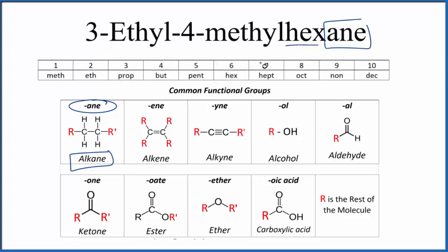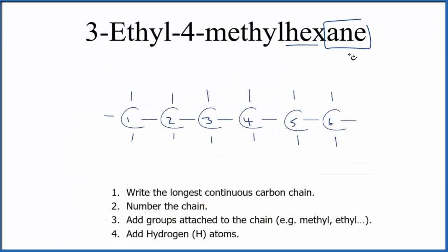For hex, hex is a prefix when we have six, so we're going to have six carbon atoms with single bonds. Let's put those up there and label the carbons one through six. So at this point, we have hexane.